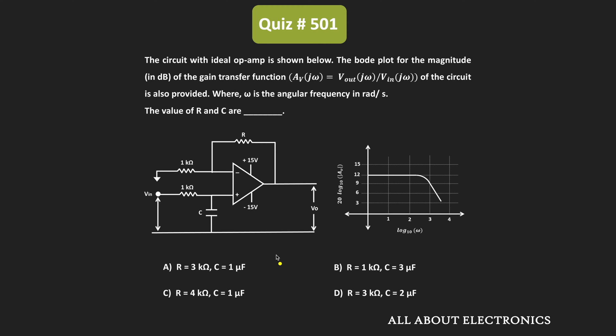Hey friends, welcome to the YouTube channel all about electronics. In this question, we have been given an op-amp based circuit where the given op-amp is ideal. We have also been given the Bode plot for the magnitude of the gain transfer function, where ω is the angular frequency. Based on this Bode plot, we have been asked to find the values of R and C.